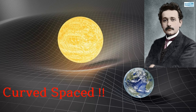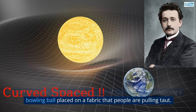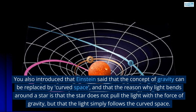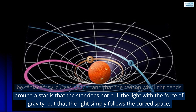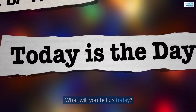Q1. Last time, you introduced the picture of curved space, imagining a bowling ball placed on a fabric that people are pulling taut. You also introduced that Einstein said the concept of gravity can be replaced by curved space, and that the reason why light bends around a star is that the light simply follows the curved space. What will you tell us today?